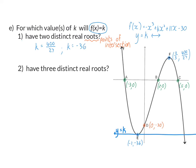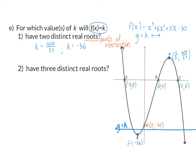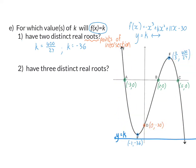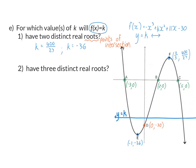For which value or values of k will F(x) = k have three distinct real roots? Moving the horizontal line just above the bottom turning point gives three points of intersection, and this continues up to the top turning point. Above the top or below the bottom turning point there is only one root. So k can be any value between -36 and 400/27.